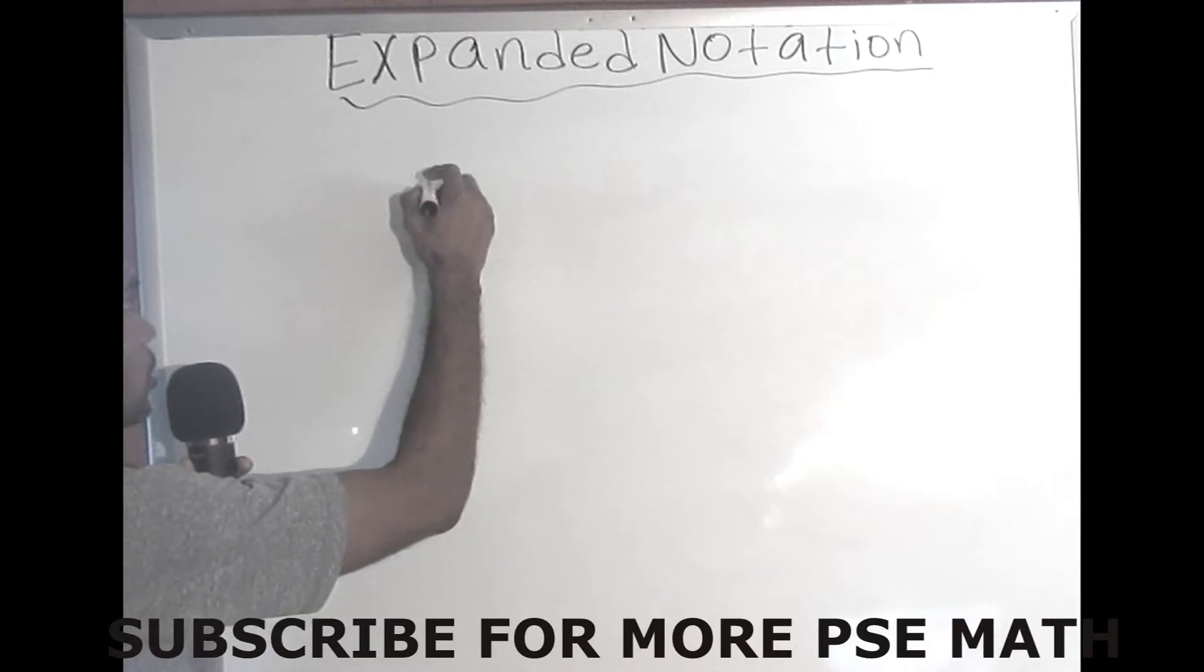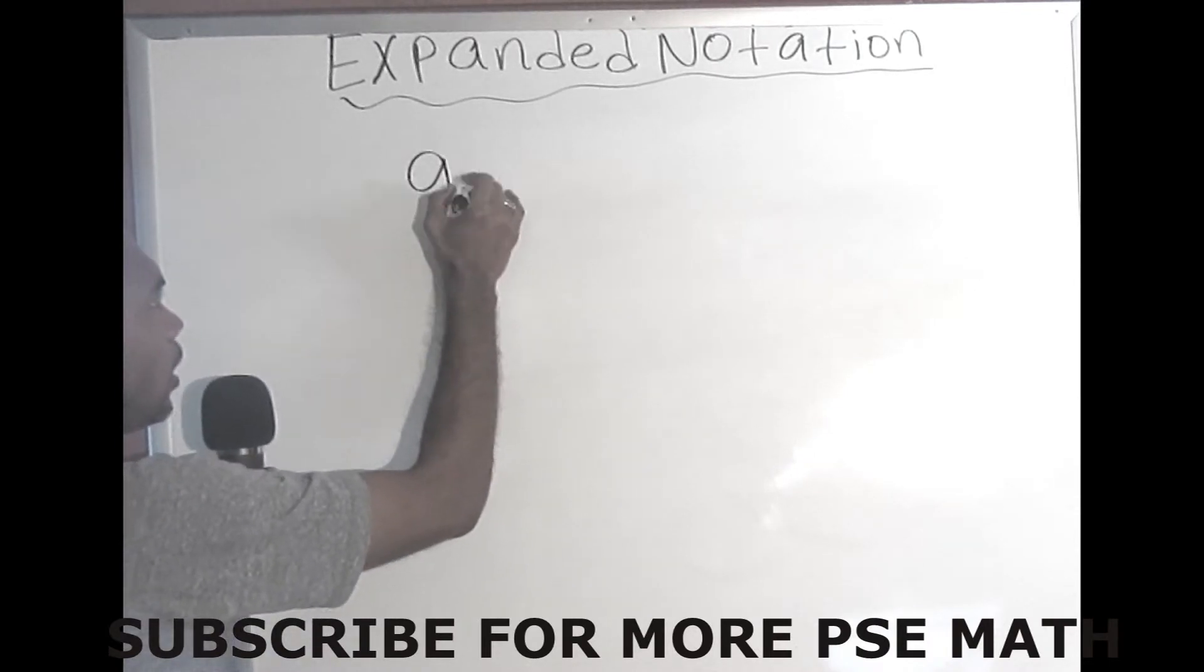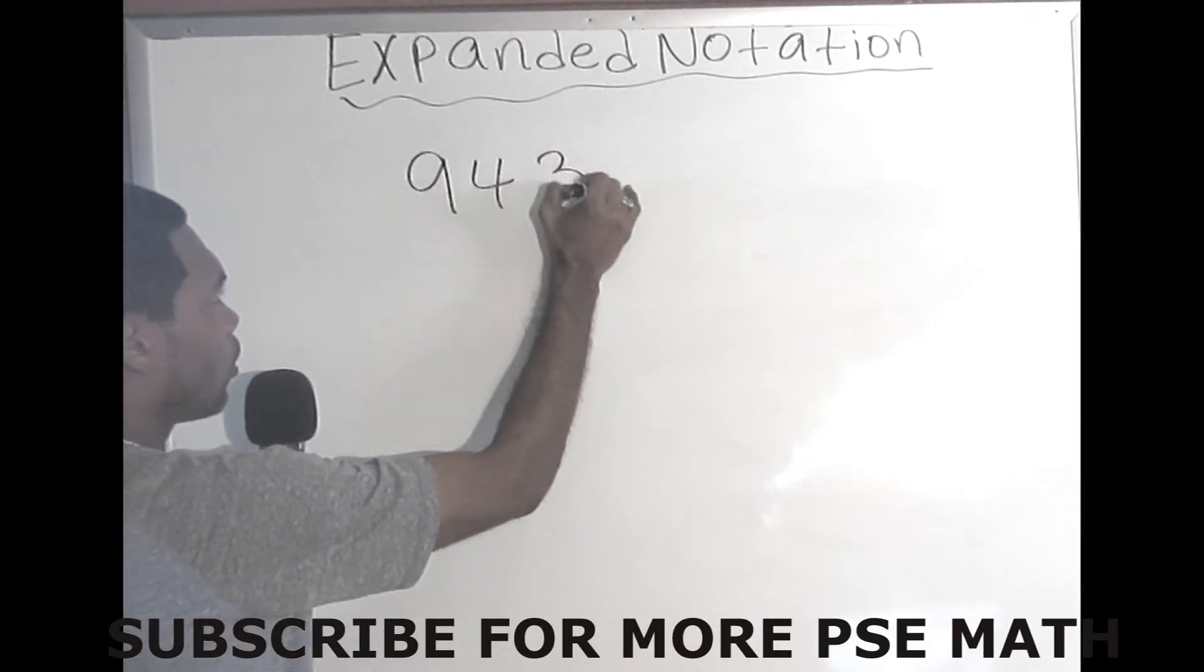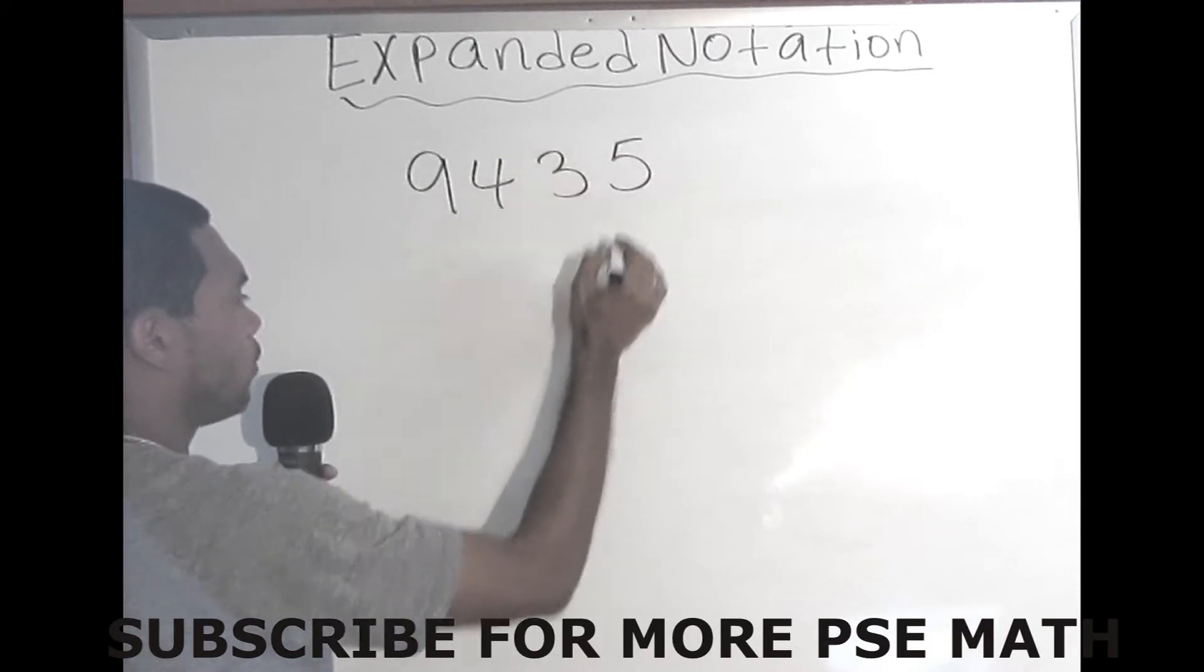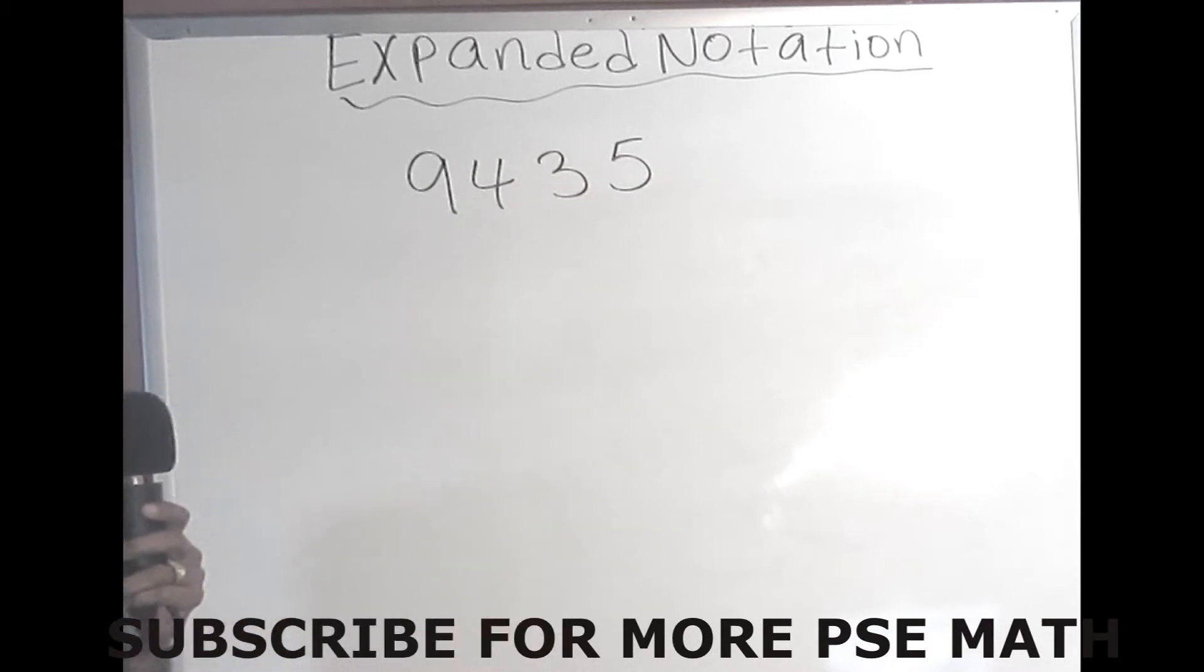So we're going to place some numbers on the board. Here we have 9, 4, 3, 5. So 9,435. And we want to expand this number. So while expanding this number, you'll see the importance of place value.